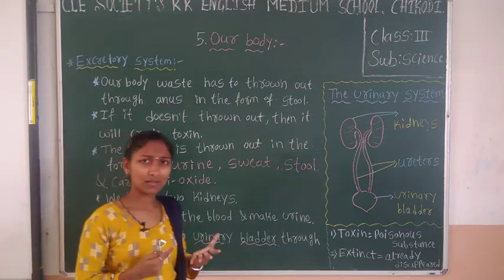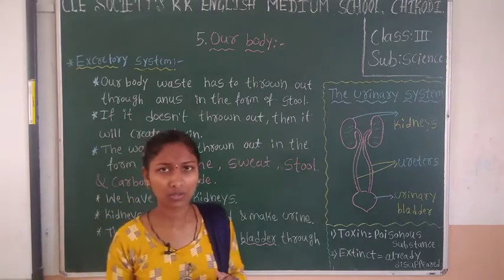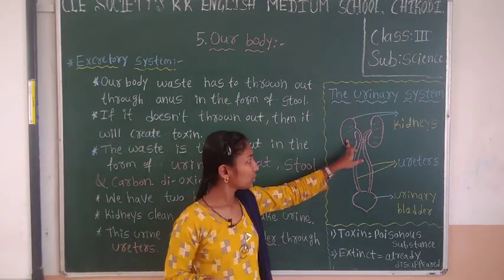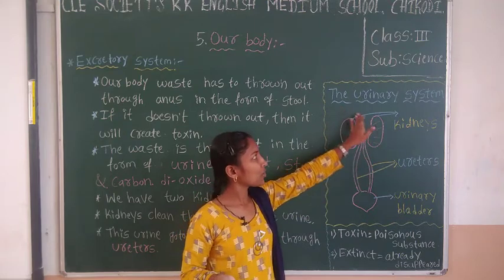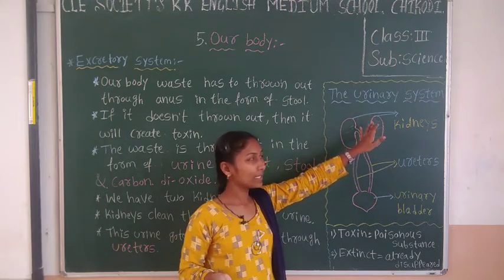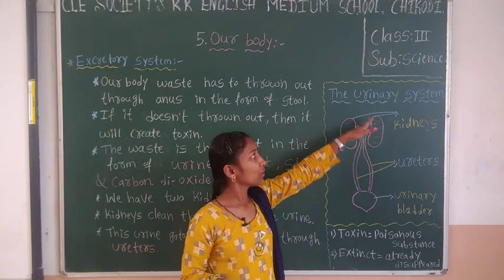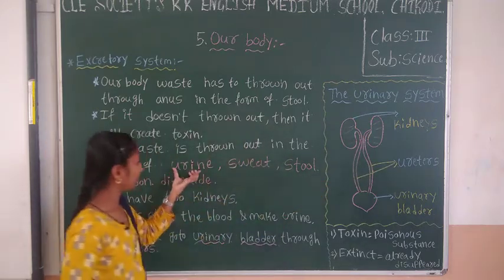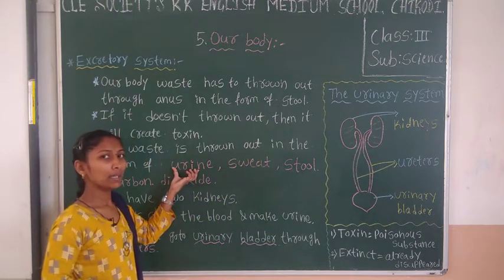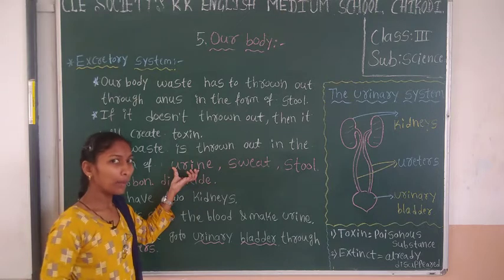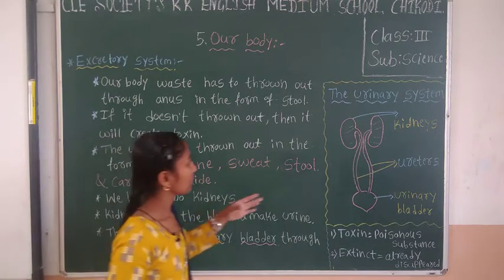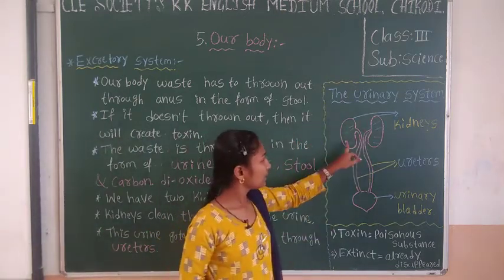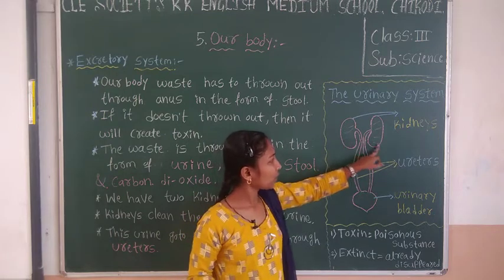How does urine pass out from our body? Here we have a diagram of the urinary system. In our body we have two kidneys. These two kidneys purify the blood. The purified blood is transferred back to the heart, and after that it continues circulation.